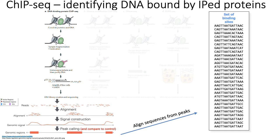The general idea is that in vivo in your cell, at any given time, you might have different transcription factors and other factors binding to their target DNA sequences on the genome. And so the idea is that you can add chemicals like formaldehyde, which will basically cross-link proteins or other transcription factors to their target DNA sequence.